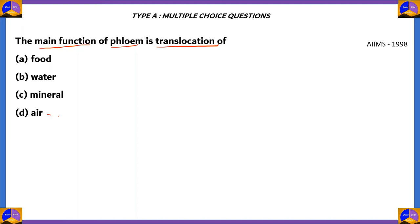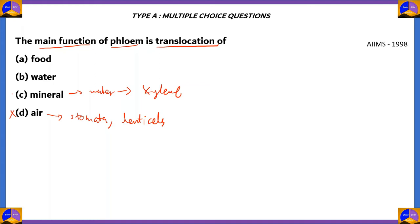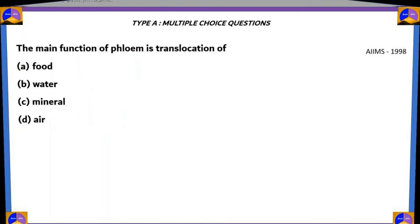Let's look at our options. Air is translocated by stomata in leaves and lenticels in the stem, so option D is incorrect. Minerals are translocated along with water in the xylem, so option C is incorrect. Water is also incorrect because the translocation of water takes place in the xylem. Therefore, the right answer is option A, food. Food is translocated in phloem, and the main function of phloem itself is the translocation of food.